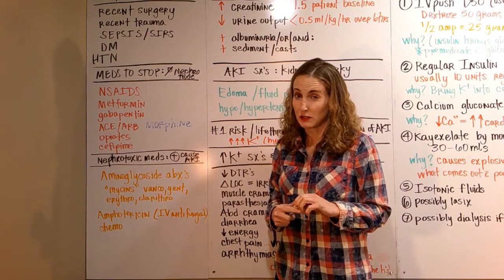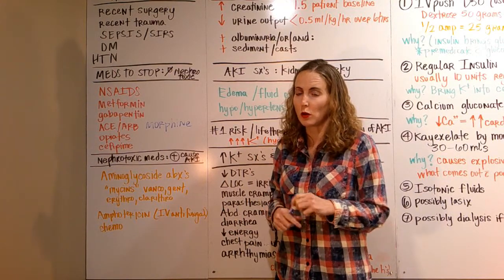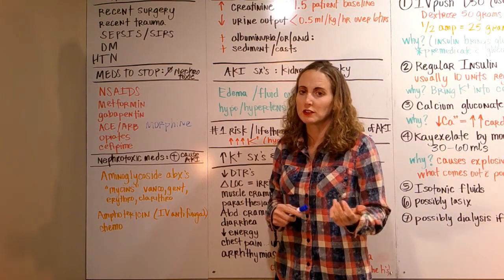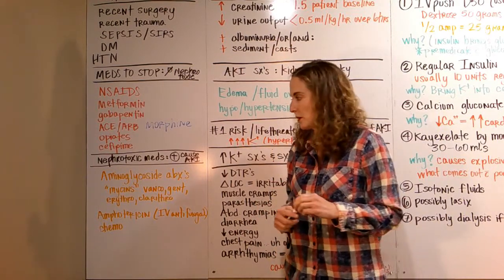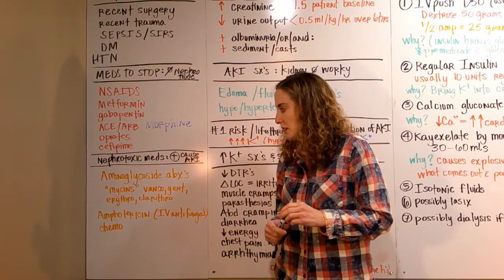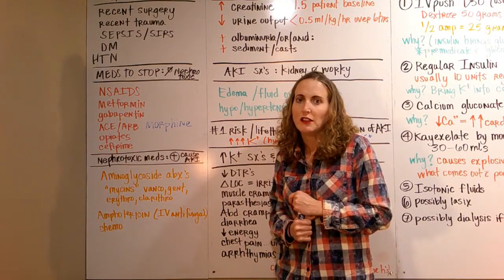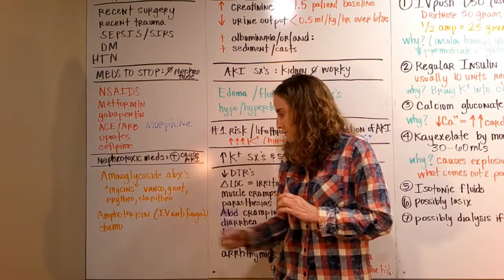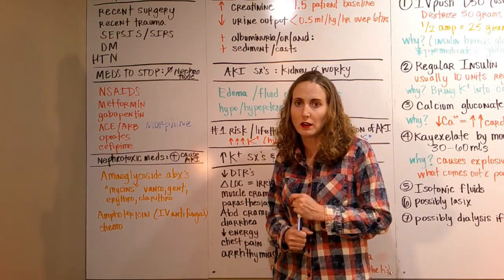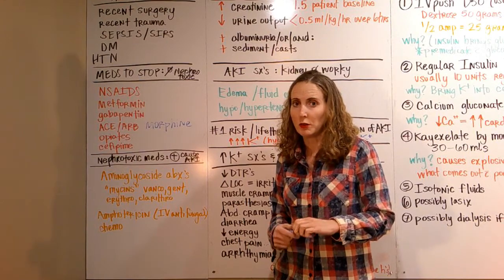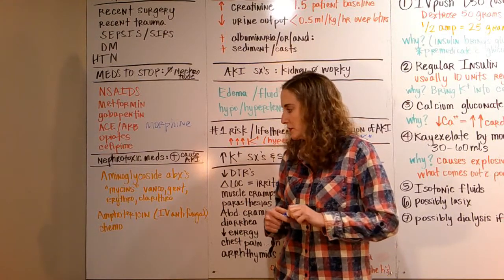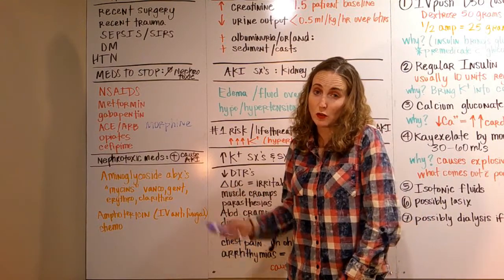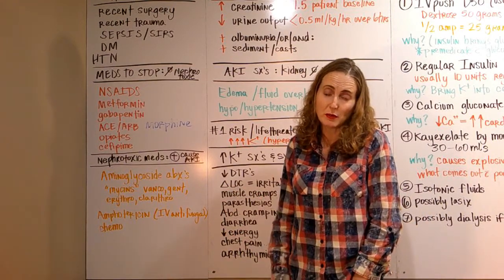IV medications are going to cause an acute kidney injury more often. I'm sure the PO can cause it, but more risk with IV. Amphotericin, otherwise known as amphoterrible, that's the IV antifungal medication. It's not used a ton but mostly in the hospital with severe patients. And then our chemotherapy patients—chemotherapy kind of messes with everything.